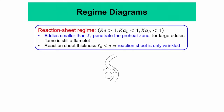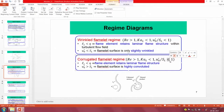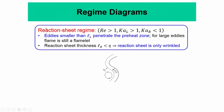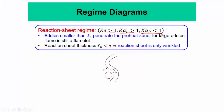In the reaction sheet regime, the Reynolds number is greater than 1 and the flame Karlovitz number is actually greater than 1. When the flame Karlovitz number is greater than 1, the reaction Karlovitz number is still less than 1.